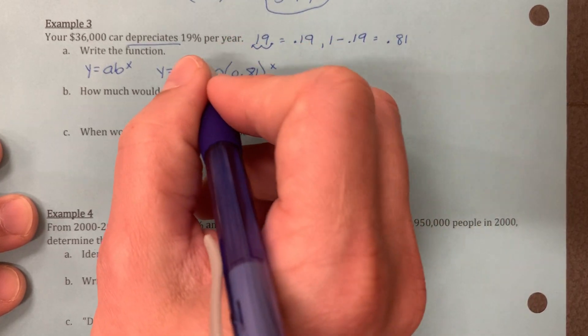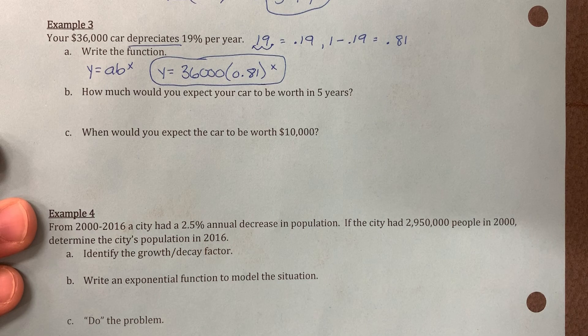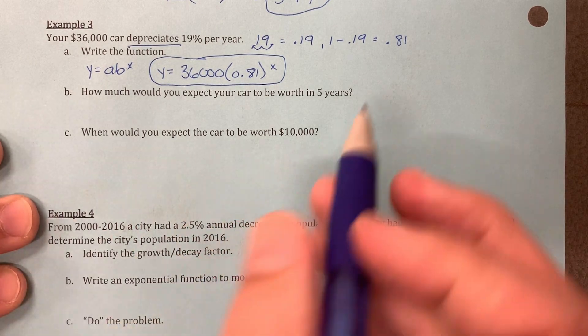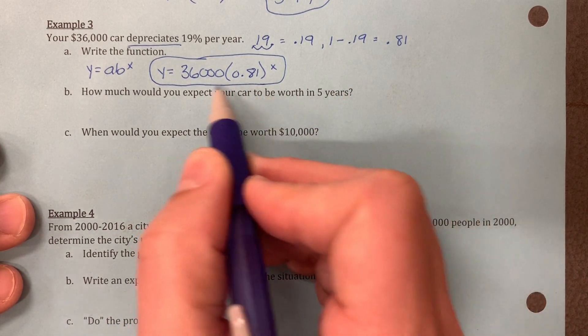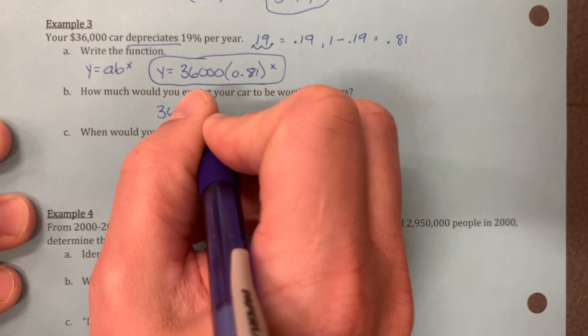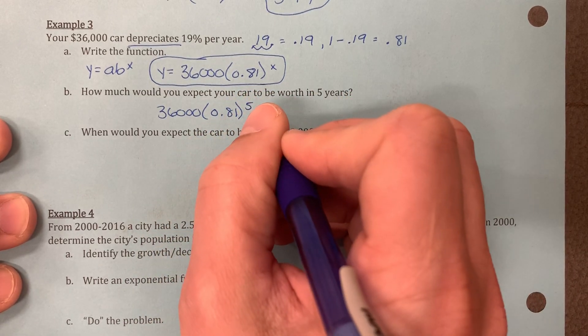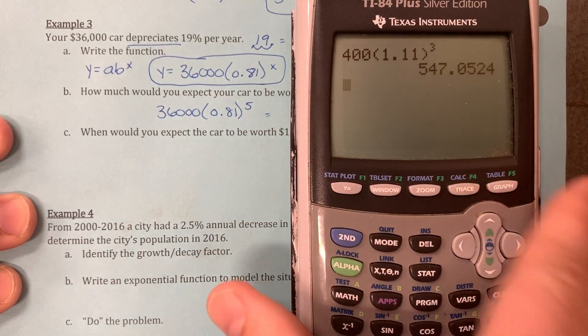And we raise it to the x power because it's an exponential function. Now we want to calculate what's it going to be worth in 5 years, so use that function. 36,000 times 0.81 for 5 years. Slap that in the calculator.